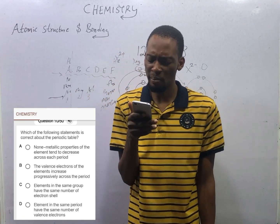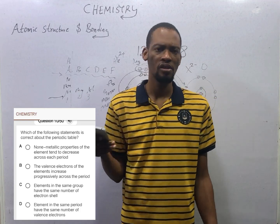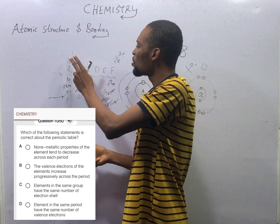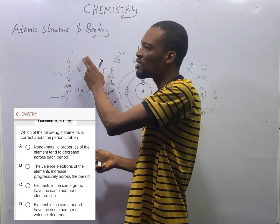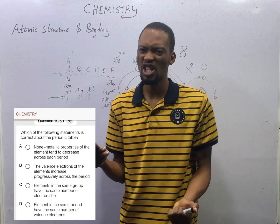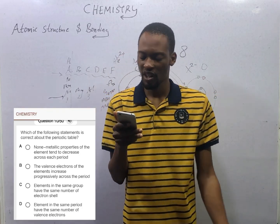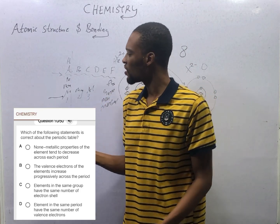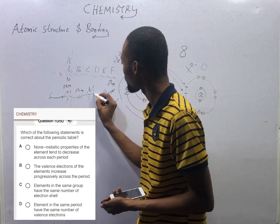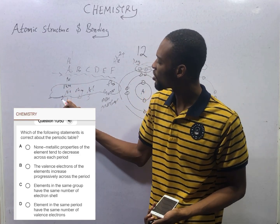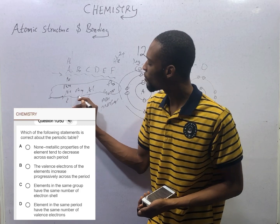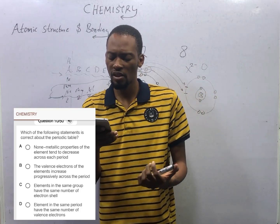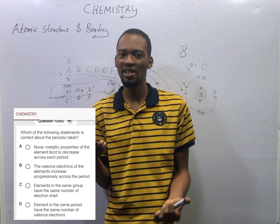Option C says elements in the same group have the same number of electron shells — no. Hydrogen is in Group 1, sodium is in Group 1, potassium is in Group 1, but potassium has more shells than hydrogen, although they are in the same group. Being in the same group does not mean having the same number of shells. Option D says elements in the same period have the same number of valence electrons — if you have sodium, magnesium, and aluminium being in the same period, they have different numbers of valence electrons. So out of these options, option B is the only correct one when it comes to the periodic table.